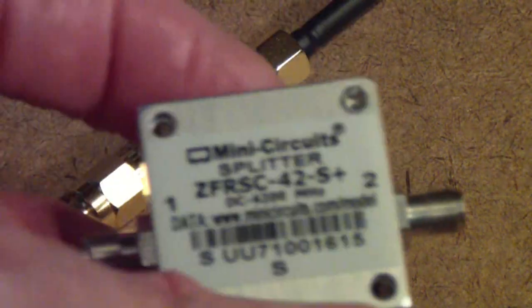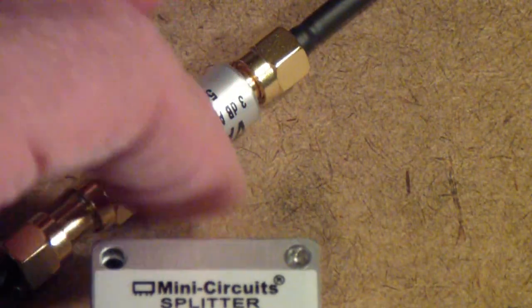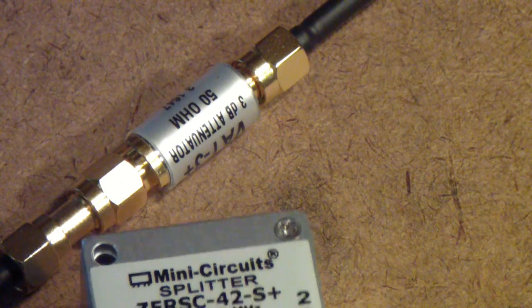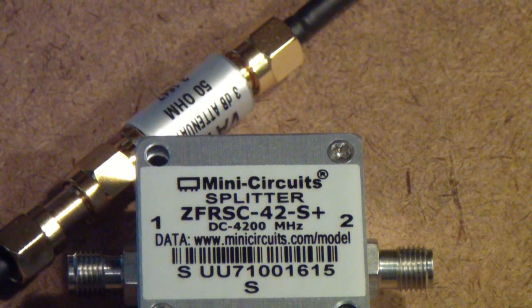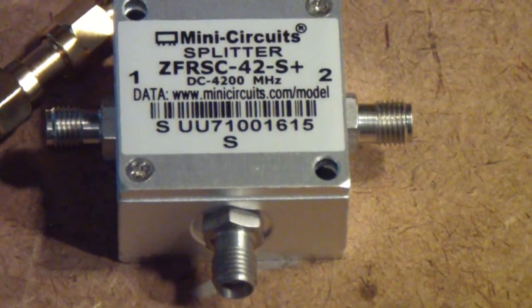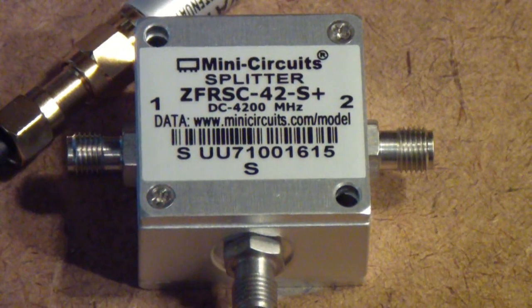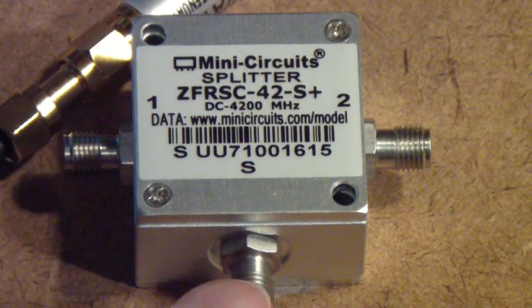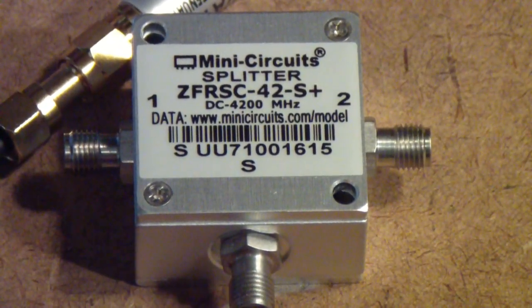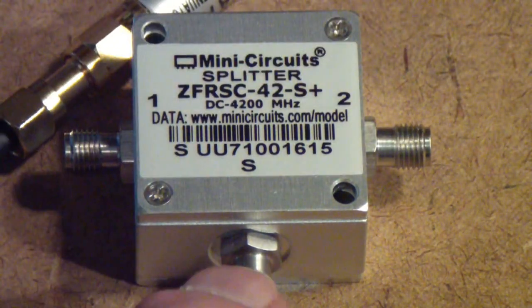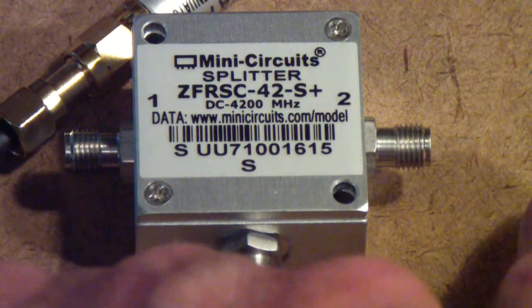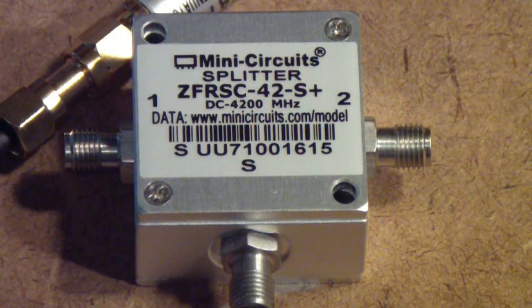This is the splitter, and what it does is it splits a signal on the input, which is called S, and sends half of the signal to port 2 and half of the signal to port 1.